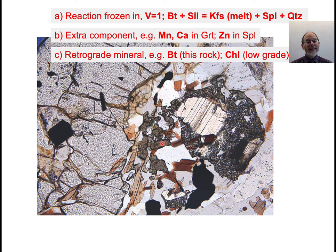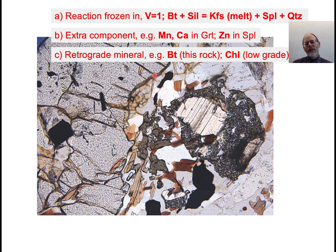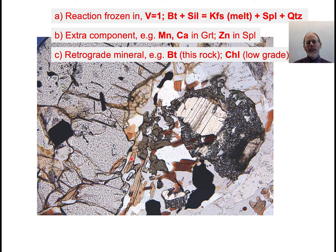One of these minerals could just be retrograde — meaning there's been some infiltration of water that caused back-reaction of some minerals but not others. A really common example is seeing chlorite growing around the edges of garnet: the garnet has reacted with water that came into the rock late and created chlorite. That doesn't mean garnet and biotite are out of equilibrium; this extra chlorite sitting along the rim could just be a late-stage phenomenon.